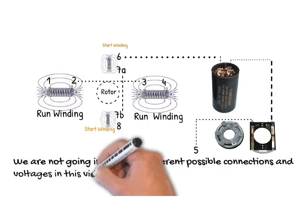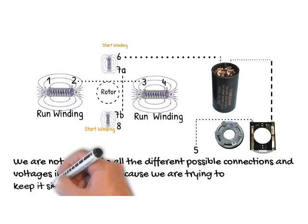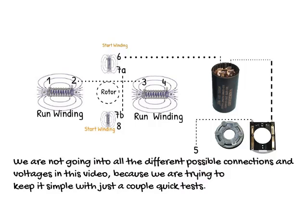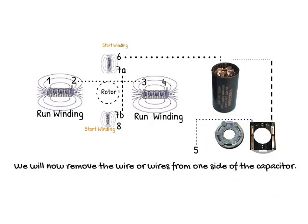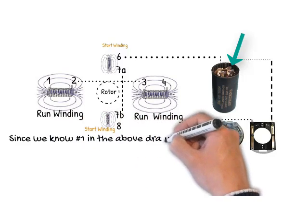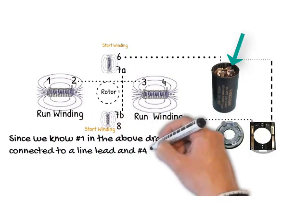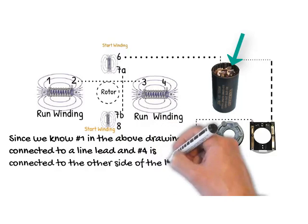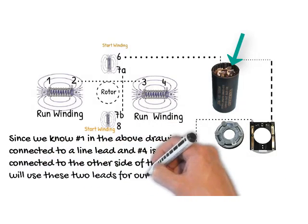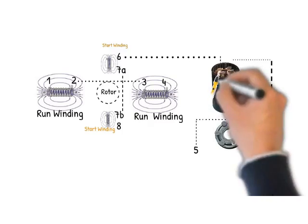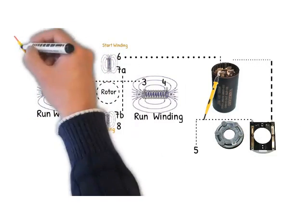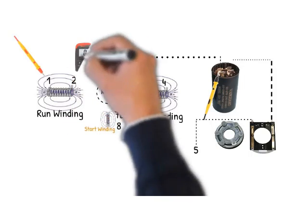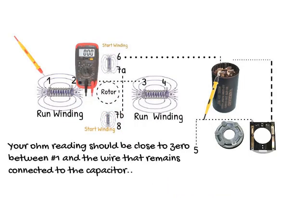We are not going into all the different possible connections and voltages in this video, because we are trying to keep it simple with just a couple quick tests. We will now remove the wire or wires from one side of the capacitor, as indicated by the arrow. Since we know number one in the above drawing is connected to a line lead, and number four is connected to the other side of the line, we will use these two leads for our following test.